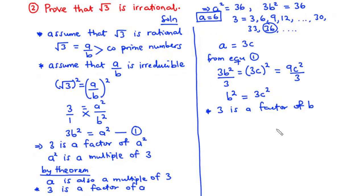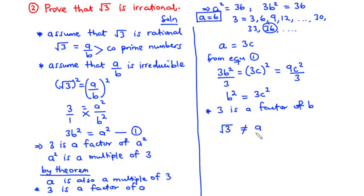This is where we have our contradiction. Initially, we assumed that the fraction a over b was irreducible, which means the fraction was already in simplified form. Hence, a and b were co-prime numbers, and thus the common factor between a and b was 1. However, we realize that 3 is a factor of a and 3 is also a factor of b, which means this fraction is reducible, and hence a and b are not co-prime numbers. Therefore, we say that the square root of 3 is irrational and hence cannot be expressed in the form of a fraction a over b. We can also use this same solution process to show that the square root of any prime number is irrational.